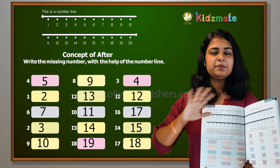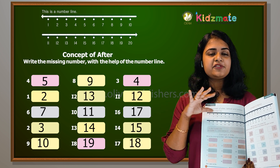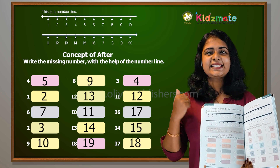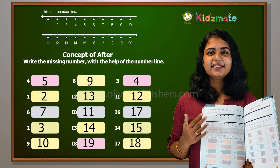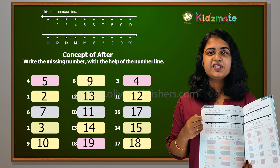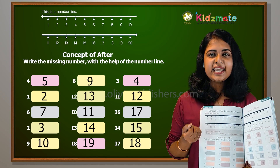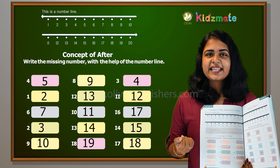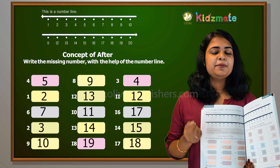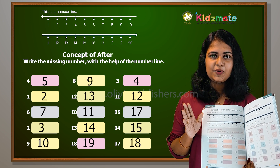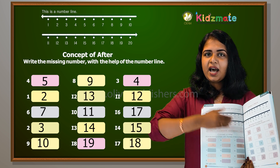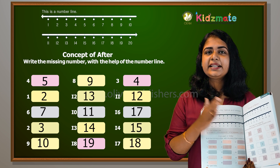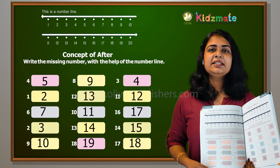I'll show you quickly. After 5? 6. After 9? 10. After 12? 13. After 8? 9. So after the concept, before the concept — it's called the number. And in between, it's called the number.